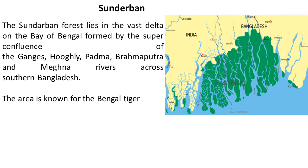The Sundarban lies on the border of West Bengal and Bangladesh, at the confluence of rivers Ganga, Hooghly, Padma, and Brahmaputra, at the southern tip of Bangladesh. It is also known for the Bengal Tiger. It is frequently in the news because there is a danger of this region being submerged due to global warming — an important People and Environment topic to remember.